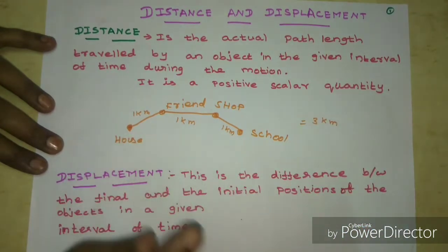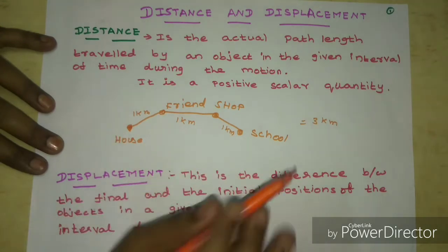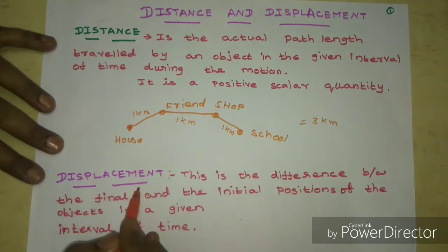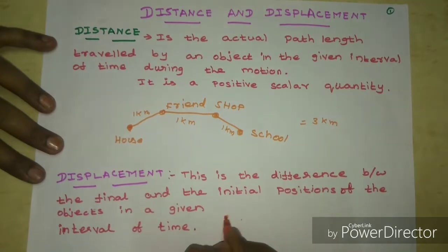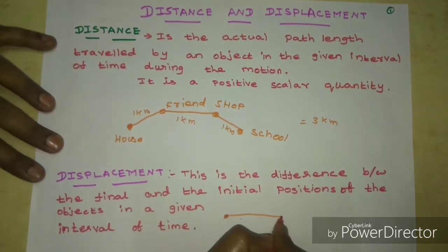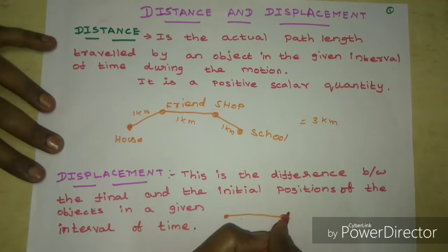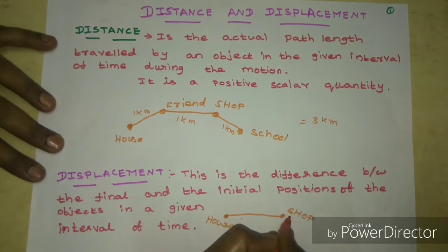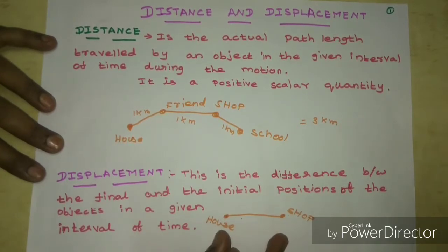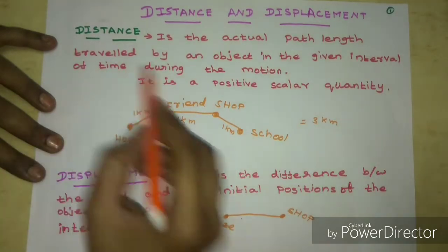This is the distance: the total path traveled by a person or object. Now, displacement is the difference between the final and the initial position of the object in a given time interval. If you subtract the initial position from the final position, that gives your displacement.